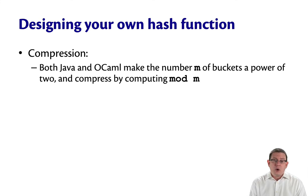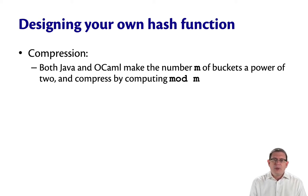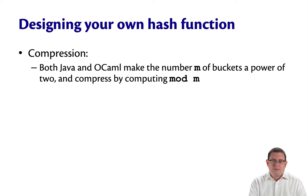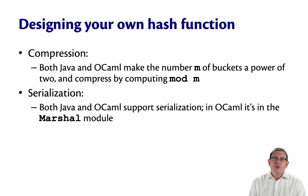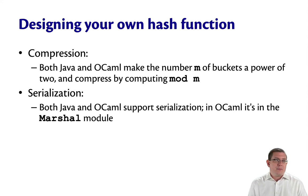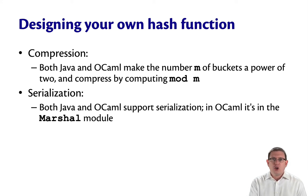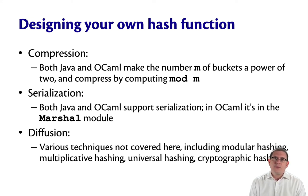If you're going to design your own hash function, it's tricky business. For compression, both Java and OCaml make the number of buckets a power of two and then compress by mod of that number of buckets. For serialization, both Java and OCaml support it so you can get a pre-implemented version of converting an arbitrary type to a string of bytes. In OCaml, it's in a module called Marshal in the standard library. For diffusion, that's really the hard part, and there are various techniques not covered here.